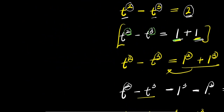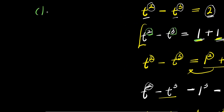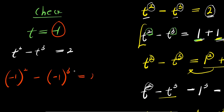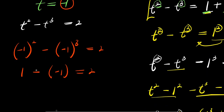We can verify by substituting t = −1 into the original equation t² − t³ = 2. We get (−1)² − (−1)³ = 2. Since −1 raised to an even power is positive and to an odd power is negative, this gives 1 − (−1) = 1 + 1 = 2, which equals 2. Confirmed.